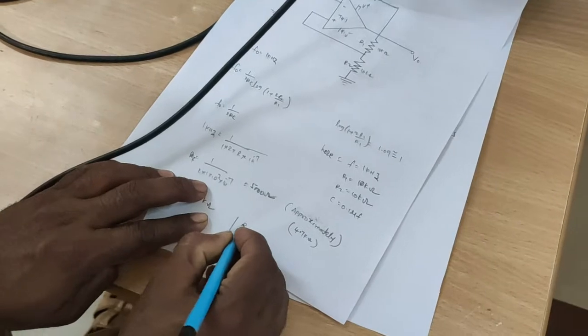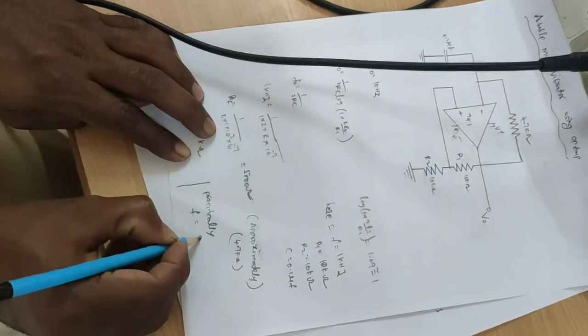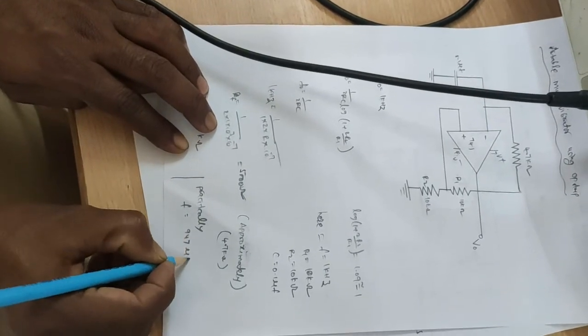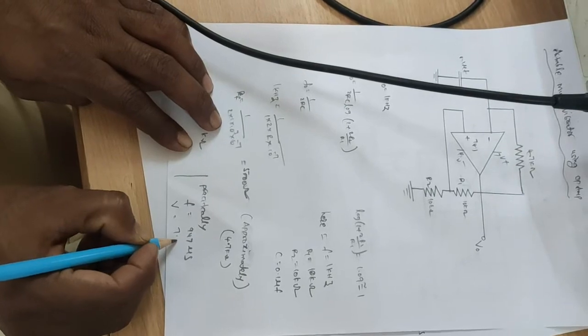In practically, f equal to 947 microsecond and voltage equal to 7.5 volts.